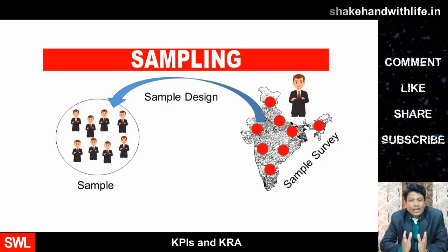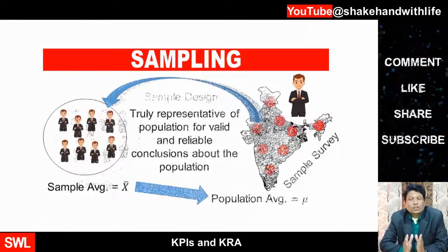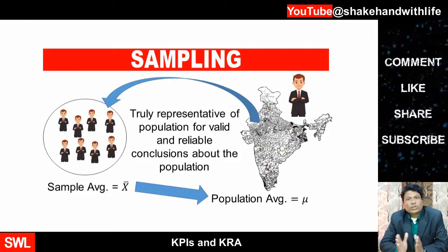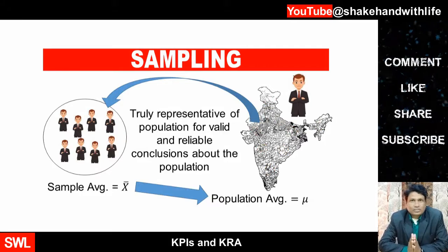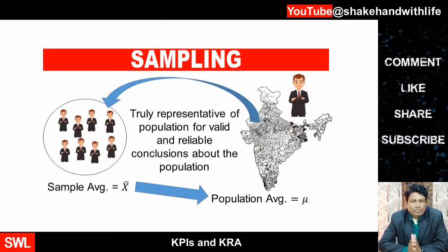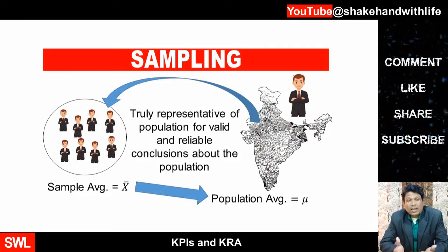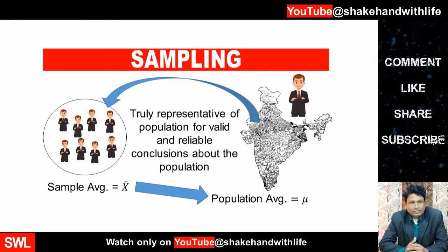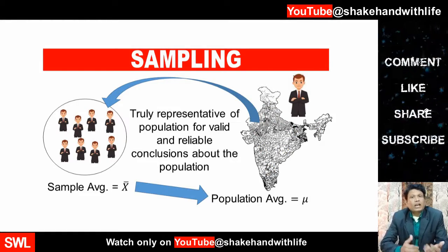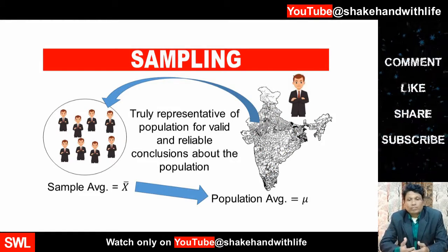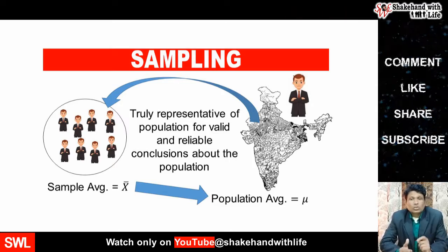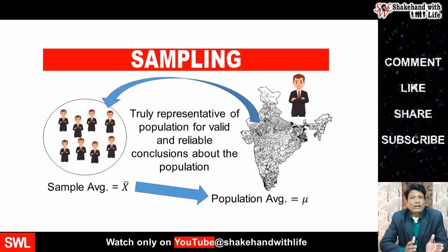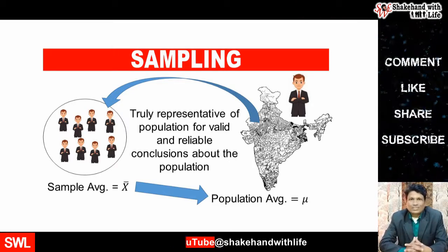Therefore, a sample should be truly representative of the population characteristics, like the death age of males in India. And it should be without any bias so that it may result in valid and reliable conclusions.